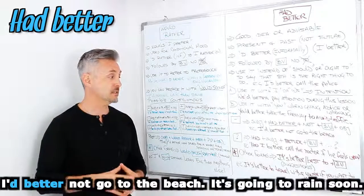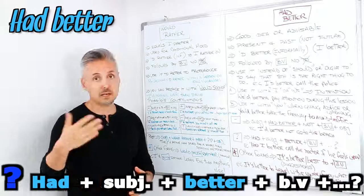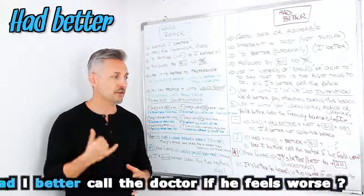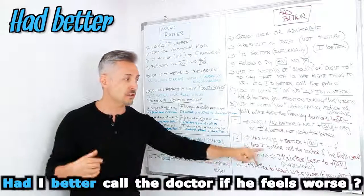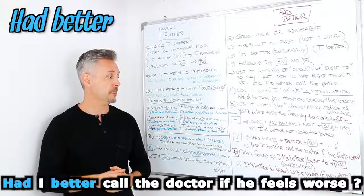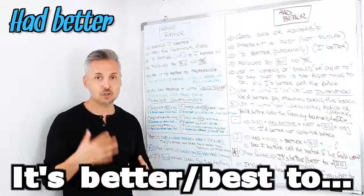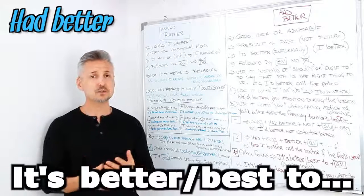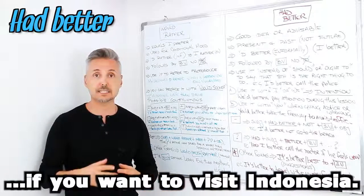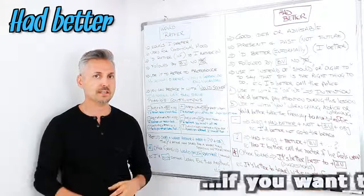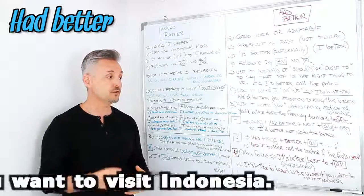For an interrogative sentence with 'had better', the formula is: had + subject + better + base of the verb + the rest. For example: 'Had I better call the doctor if he feels worse?' — so I have a friend who is ill and I ask another friend that question. We also have other forms for 'had better': 'it's better to' or 'it's best to' + base of the verb, used for suggestions. For example: 'It's better to travel in the winter if you want to visit Indonesia.'